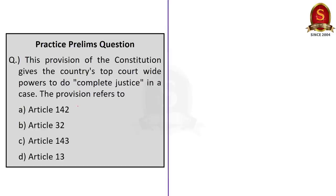Now, let us take up the second question. This provision of the constitution gives the country's top court wide powers to do complete justice in the case. This provision refers to option A, article 142, option B, article 32, option C, article 143, option D, article 13. We have seen in our discussion that article 142 gives the country's top court wide powers to do complete justice in a case. So, the correct answer here is option A, article 142. Here, the other articles, like article 32 deals with the right to constitutional remedies, article 143 of the constitution authorizes the president to seek opinion of the supreme court and article 13 basically declares any law that is inconsistent with the fundamental rights of the people would be declared void.